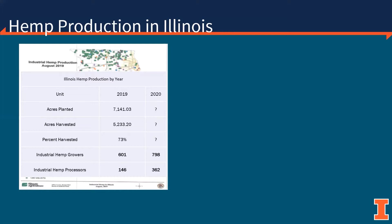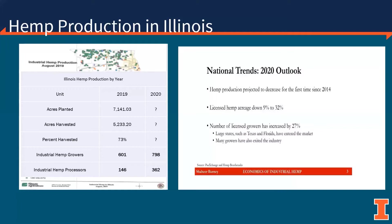If we fast forward to 2020, we saw increases in both growers and processors across the state. While we do not have production information for 2020 at this time, we can expect numbers of growers to go up from 2019 to 2020. We will likely even see average production acres per grower and potentially total acres decrease.